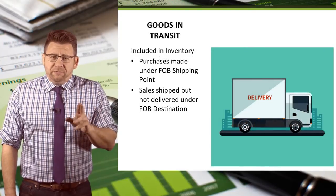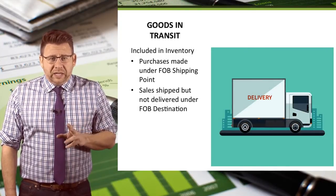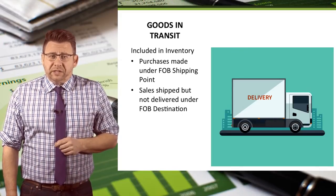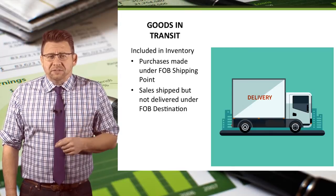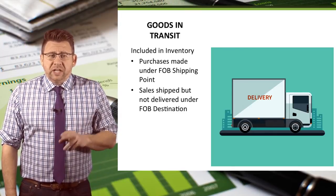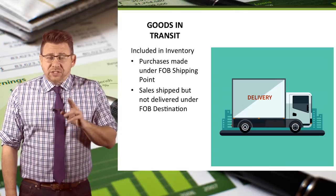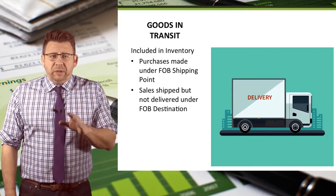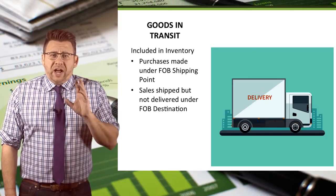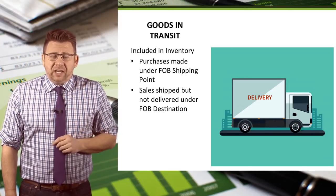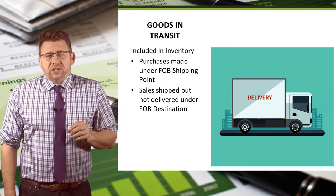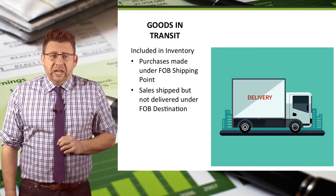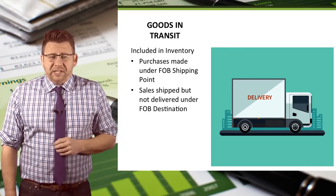Goods in transit are inventory goods that are not currently in the inventory warehouse, but still might need to be included in the quantity of inventory. Recall that buyers of inventory take ownership of goods shipped FOB shipping point as soon as they are shipped, so items like this would need to be included in inventory even though they are not received and physically in inventory. Likewise, goods sold and physically shipped FOB destination should be included in inventory if they have not yet been received by the buyer.